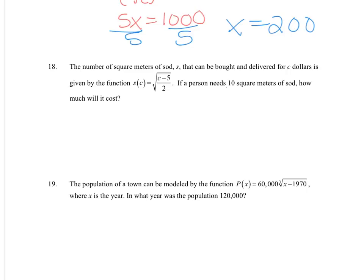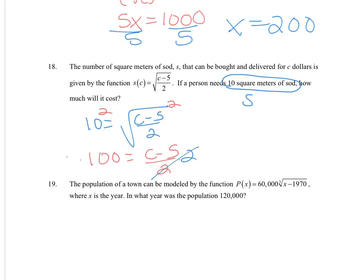So if they need 10 square meters, 10 is our s value. So we'll square both sides to eliminate the square root, multiply by 2, add 5, so our cost is $205.